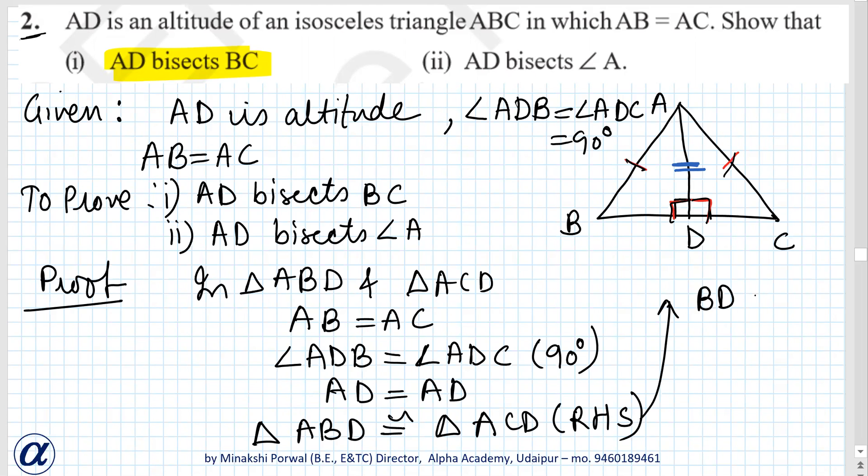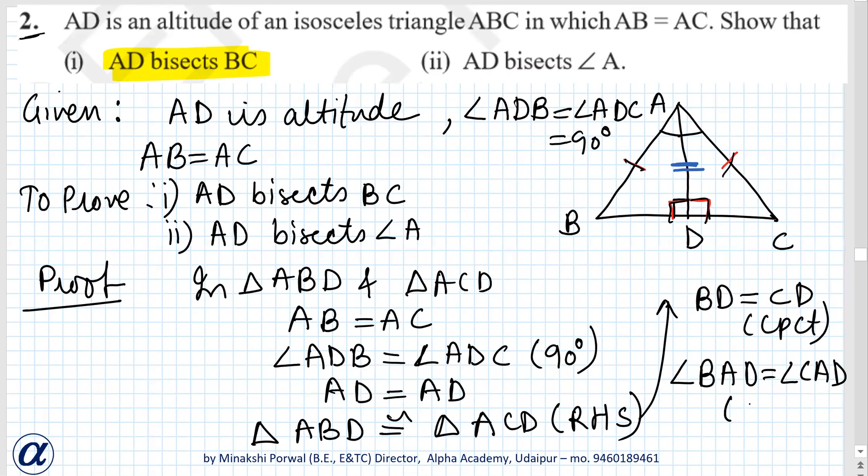BD equals CD by CPCT. So first part is proved. Second, this angle equals this angle also by CPCT. Angle BAD equals angle CAD, and this is also by CPCT. This is the meaning of AD bisects angle A.